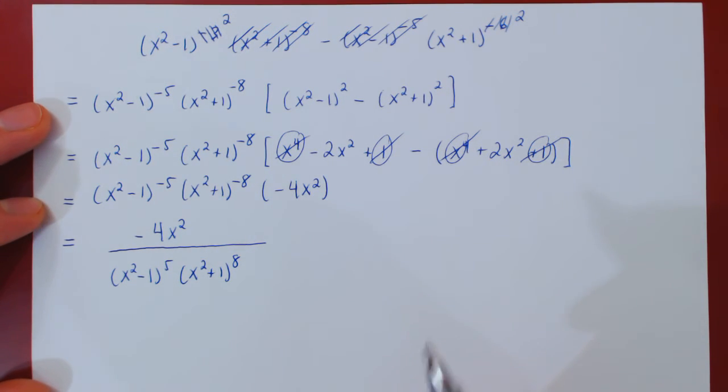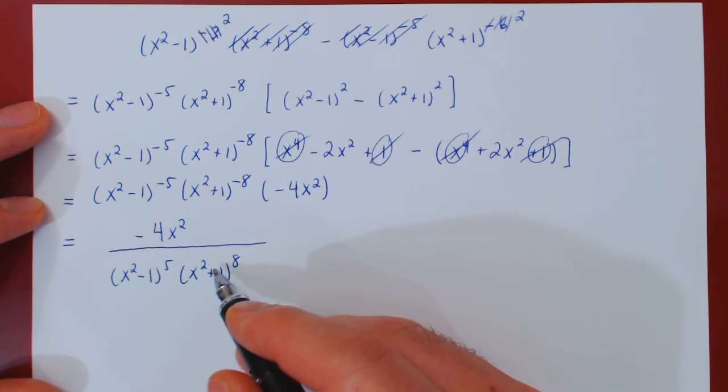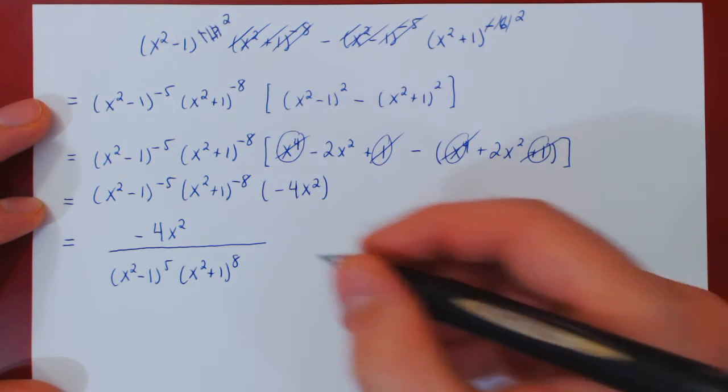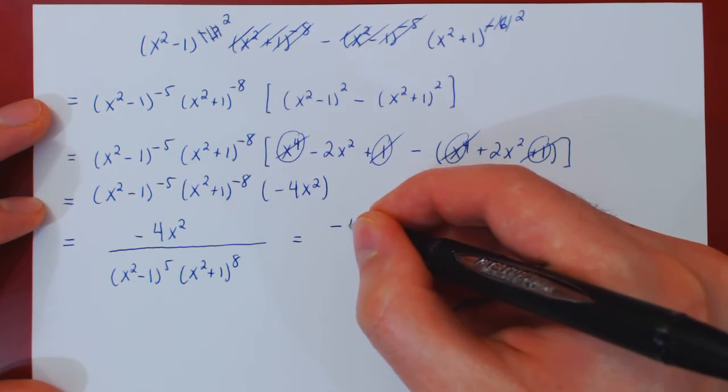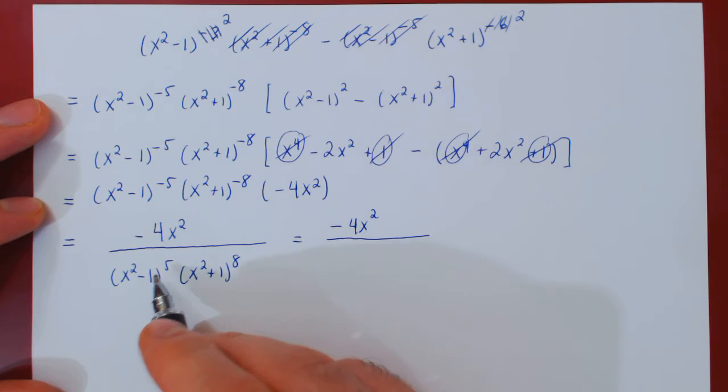And there's one last thing we can do. If you notice, x squared plus 1 is irreducible over the real number, so we can't factor this. But x squared minus 1 is x minus 1 times x plus 1. So, we can factor a little bit more.